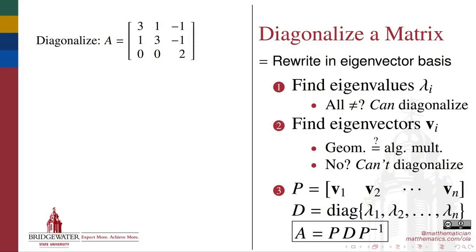By default, when we write down a matrix, we're describing a way to transform the standard basis coordinates of vectors in its domain. If we can rewrite the action of that matrix in terms of a basis of its eigenvectors, then that matrix will take on a new, much simpler form, which is diagonal. Here we look at the process for how to diagonalize a matrix.